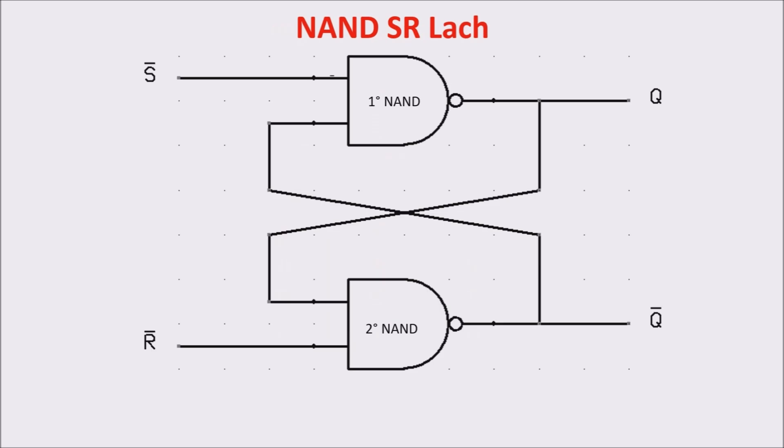Now, we come back to our latch. You have to imagine that the inputs are usually to one and we give little pulses to zero. That's why S and R are written with a little dash on the top. We keep input R to one and we give a pulse to input S to go to zero.